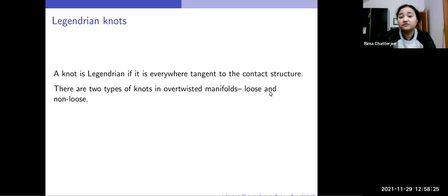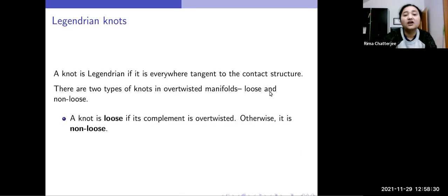Now a knot is Legendrian if it is everywhere tangent to the contact structure. There are two types of knots in an overtwisted manifold, loose and non-loose. A knot is loose if its complement is overtwisted, otherwise we call it non-loose.